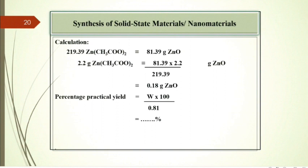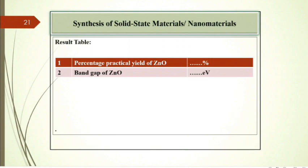Answer is 0.81 g zinc oxide. To find percentage practical yield: W times 100 divided by 0.81, that will give you the percentage practical yield. Result table: Percentage practical yield of zinc oxide and band gap of zinc oxide.